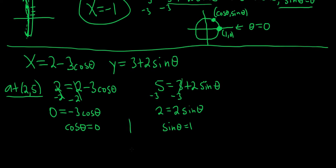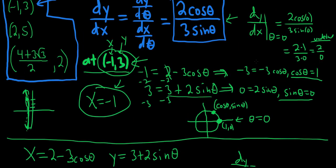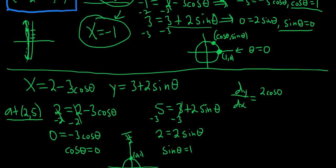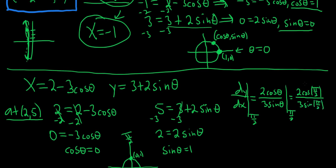Our two conditions are cosθ = 0 and sinθ = 1. On the unit circle, we're looking at the point (0, 1), which corresponds to θ = π/2. Plugging θ = π/2 into dy/dx = 2cosθ / 3sinθ: we get 2cos(π/2) over 3sin(π/2) = 2(0) / 3(1) = 0. So the slope is 0, which means we have a horizontal tangent line.